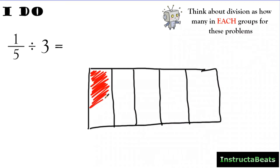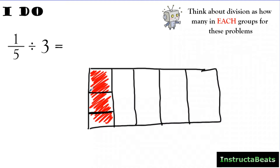I split my cake into 5 pieces and I shaded in 1 fifth — maybe it's red velvet cake — and put it on my plate. So we're starting with 1 fifth, and we're going to split this into 3 equal groups. If I split this 1 fifth into 3 equal groups, it looks like this. But because it's a fraction, we need equal groups across the entire whole. So if I split this part into 3, I have to split all of my fifths into 3 equal groups, drawing the line all the way down.